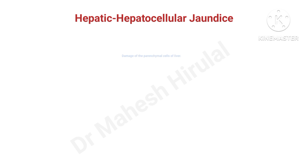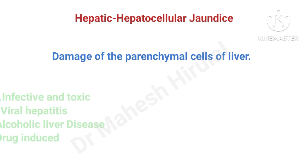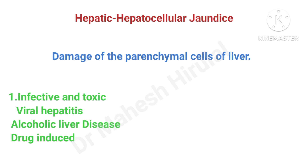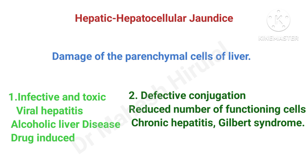Hepatocellular or hepatic jaundice is due to damage to the parenchymal cells of the liver. It may occur in two different scenarios. The first involves infective or toxic causes like viral hepatitis, alcoholic liver disease, or drug-induced hepatitis. The second involves chronic hepatitis or Gilbert syndrome, leading to defective conjugation with a reduced number of functioning parenchymal cells. The LFT picture will differ between these two scenarios, and knowledge of both is most important for diagnosis.